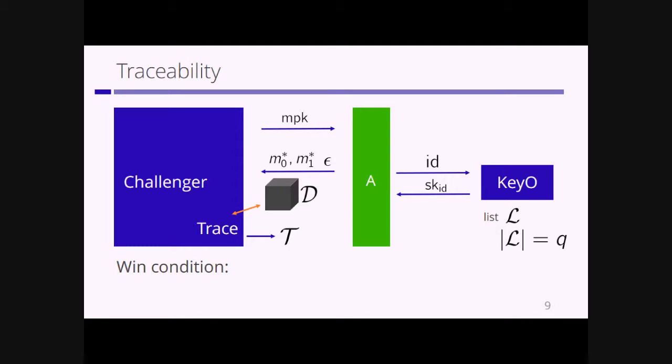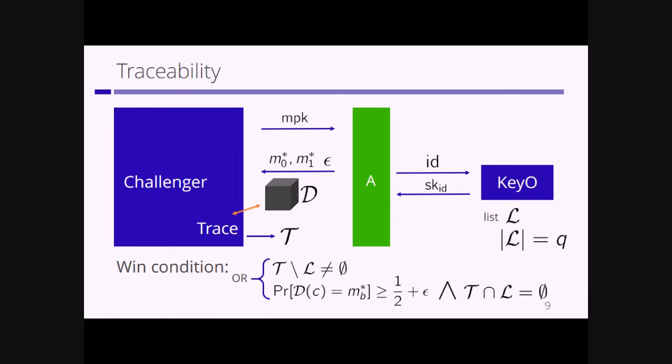The winning condition for the adversary is: if the list T includes an honest user's identity, the adversary wins. Alternatively, if the pirate decoder has non-negligible decryption probability and the list T does not include any corrupted user's identity, then the adversary wins. This is the definition of traceability.